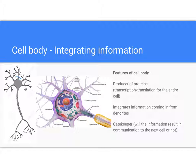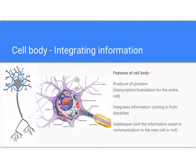The cell body of the neuron is what's most equivalent to all other cells in the body. It contains the nucleus, the genetic information, and it is also where the majority of proteins required for the function of the neuron are made through transcription and translation. The cell body also plays an important role in integrating information coming in from the different dendrites — it serves as a gatekeeper to determine whether information gets passed down into the next part of the cell, the axon.